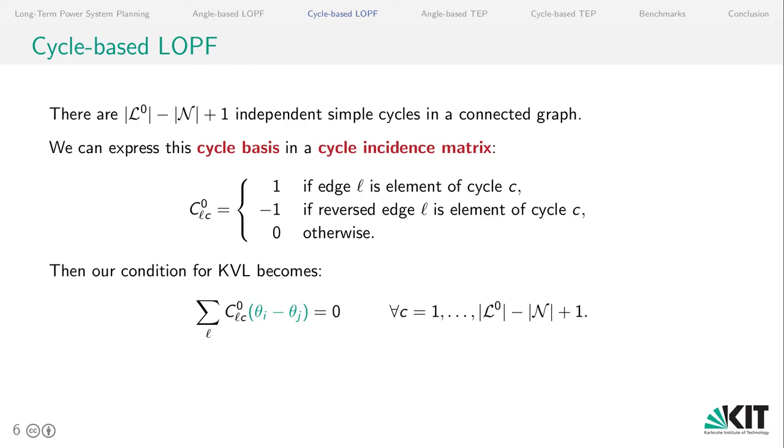In this case, our condition for Kirchhoff's voltage law, so the voltage angle differences across all cycles in the network, becomes this equation down here, where we sum up for all the lines the entries in the cycle incidence matrix and the voltage angle differences. We will use this equation on the next slide and the knowledge we have from the angle-based LOPF to simplify the formulation.